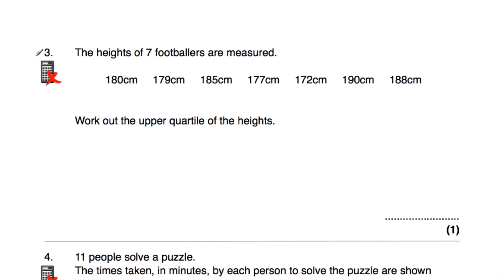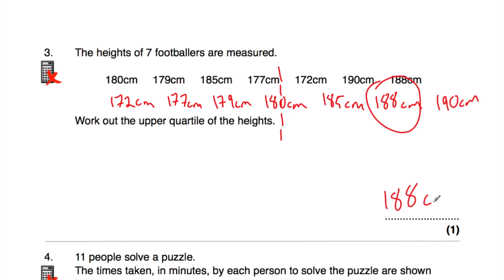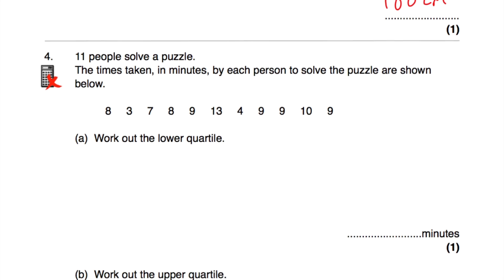Question number three: we've got the heights of seven footballers and we've been asked to find the upper quartile of the heights. The heights aren't in order, so let's order them from shortest to tallest. We've ordered them and 180 centimeters is the median. Looking at the top half of the data, the middle value is 188 centimeters — so the upper quartile is 188 centimeters.